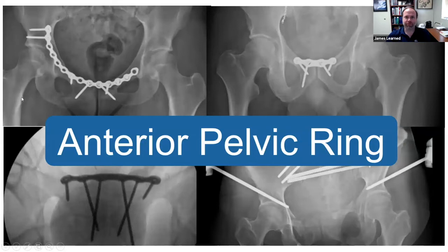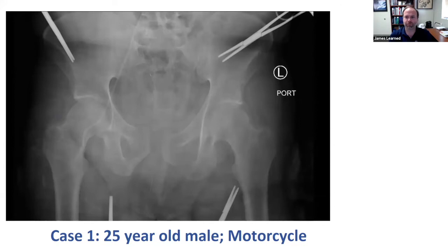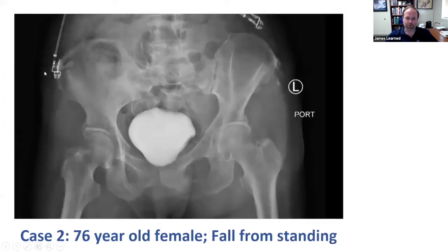Anterior pelvic ring is an important topic. As you've hopefully seen in some of the other lectures, this is a component of overall pelvic stability. We're going to talk about different options for how to deal with this. First case to get you thinking — remember to focus on the anterior ring injury only. This is a 25-year-old male who was in a high-speed motorcycle collision. He came in and this is the AP pelvis image. You can probably deduce this person is in a circumferential wrap, and you can see some residual anterior ring and even some posterior ring displacement. Compare that to a 76-year-old female who was a low-energy fall from standing, looking at geriatric versus high-energy patterns.